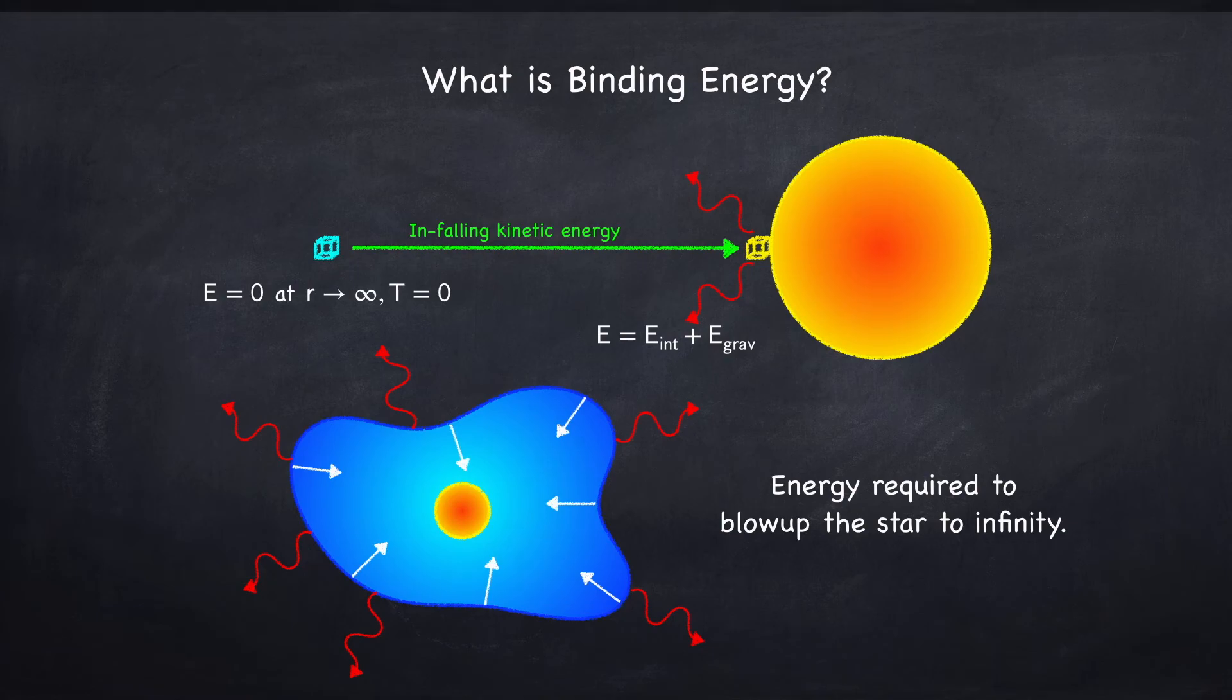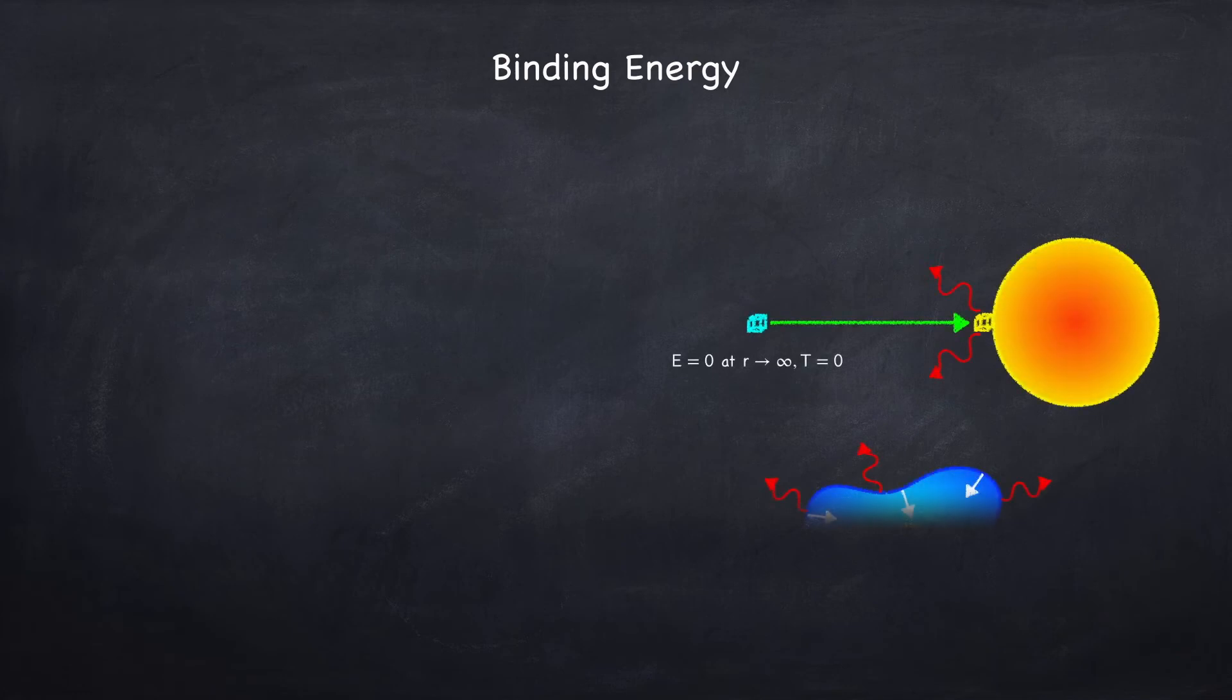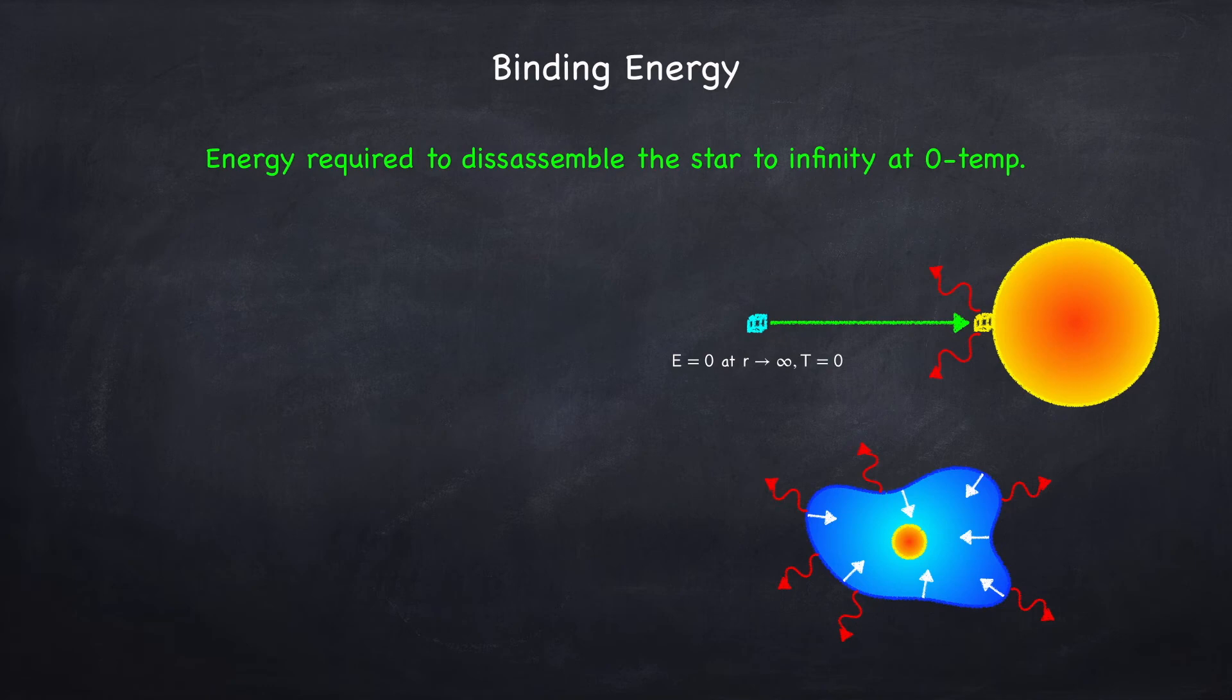So keeping these diagrams in mind, we now have a definition for binding energy as the energy required to essentially disassemble the star back to infinity at zero temperature.